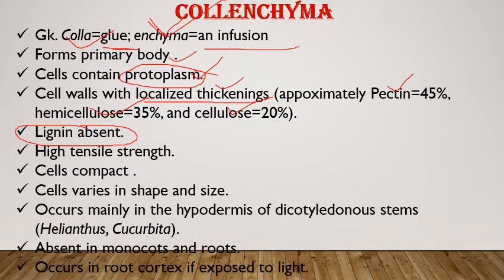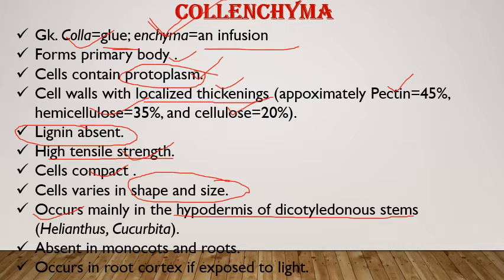Colenchyma cells have high tensile strength — we can say plasticity — so they are easy to stretch, stretchable, and can show growth and increase in length. These cells are compact. Distribution: colenchyma is mainly present in the hypodermis of dicotyledonous stems — the region below the epidermis — for example in the stem of Helianthus and Cucurbita.